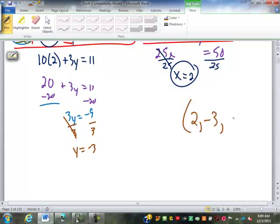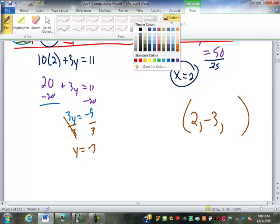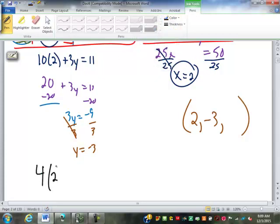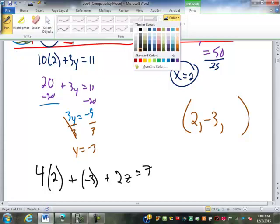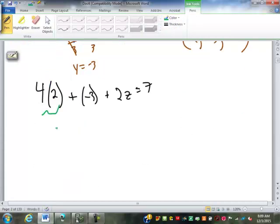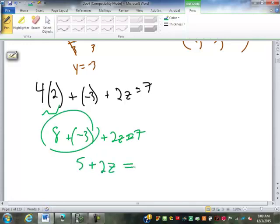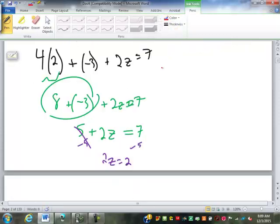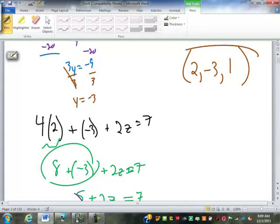So, so far, I've got 2, negative 3. I still need Z. So, I go back to any one of the original equations. I'm going to go back to that third one. Equation C because it's positive. So, I've got 4X becomes 4 times 2. Plus Y. So, that's going to be plus a negative 3. Plus 2Z. Equals 7. So, 4 times 2 is 8. Plus negative 3. Plus 2Z equals 7. 8 plus negative 3 is a 5. Plus 2Z. Equals 7. Subtract 5. 2Z equals 2. And, divide by 2. Equals 1. So, 2 negative 3 is 1.